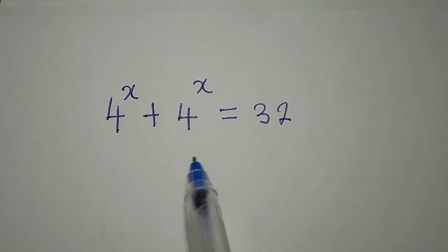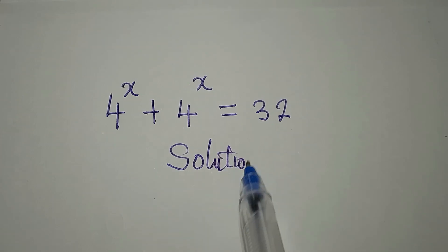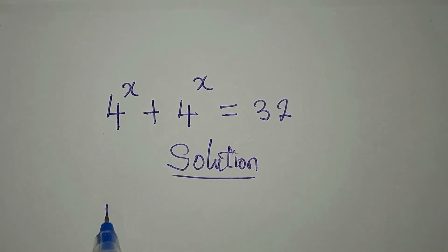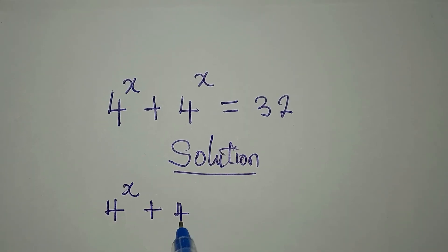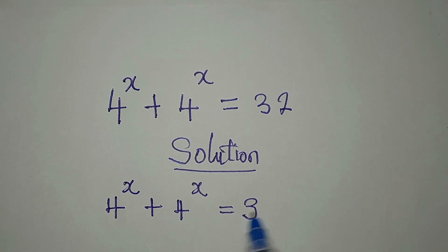Hi everyone. Let's provide the solution to this equation right here. 4 to the power of x plus 4 to the power of x equals 32.